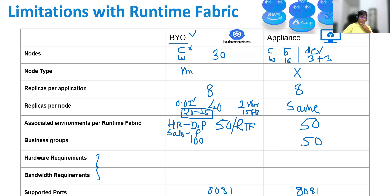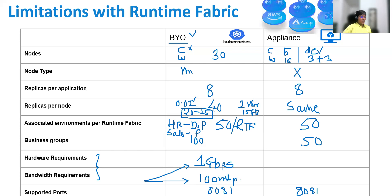Let's talk about the hardware requirement and bandwidth requirement. When we are talking about bandwidth, a high-bandwidth network is required. The minimum is 1 Gbps connectivity between each node. So between control nodes and worker nodes, communication should happen at 1 Gbps. When we are talking about outbound calls going to the internet, you need 100 Mbps. These are the minimum bandwidth requirements for RTF.